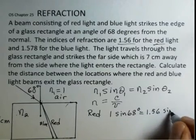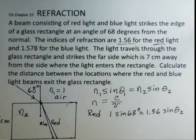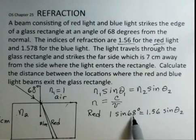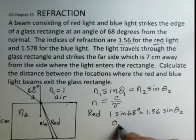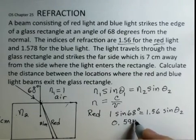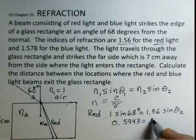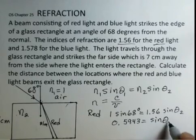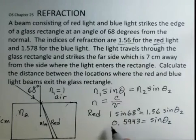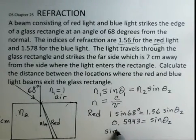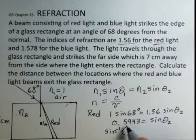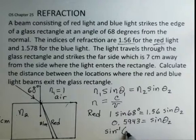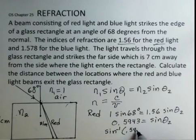And we can calculate the value of theta 2. First, we would evaluate sine of 68 degrees and then divide by 1.56. When you do that on your calculator, you should have 0.5943 equals sine of theta 2. To find the value of theta 2, you take the inverse sine of both sides. Inverse sine. This does not mean 1 over sine. It's a function, a special function. You can find it on your calculator. And we take the inverse sine of this number, 0.5943.